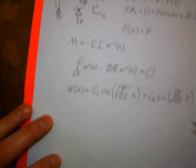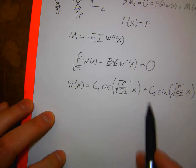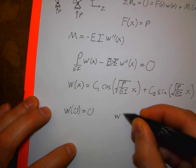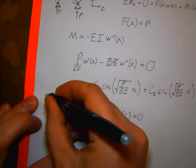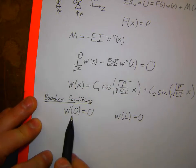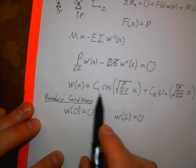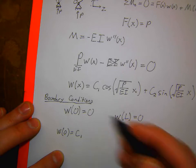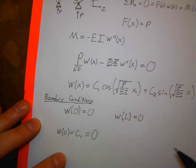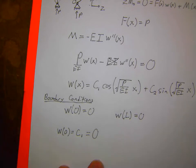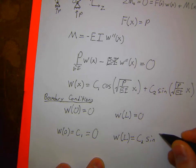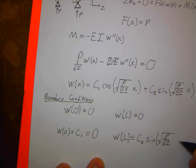Plugging in w(0) = 0: cosine of zero is 1 and sine of zero is 0, so C1 = 0. Plugging in w(L) = 0: we get C2·sin(√(P/EI)·L) = 0.